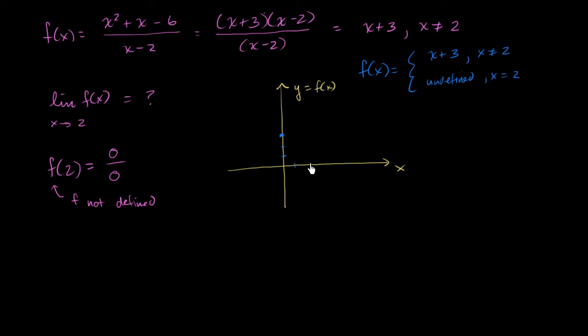So this is x is equal to 1, x is equal to 2. So when x is equal to 2, it is undefined. So let me make sure I can. So it's undefined right over there. It's undefined right over there. So this is what f of x looks like.